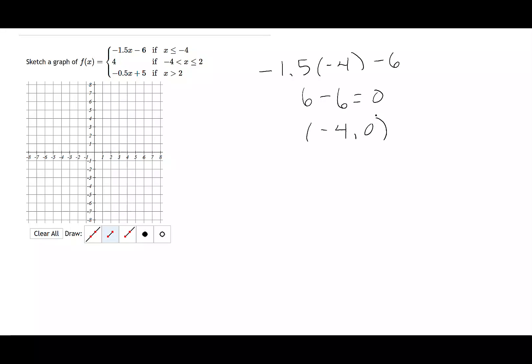What I also want to do is pick a second point that's in this piece of the graph. So what I'm going to pick is something less than negative 4. I'm going to pick it even to keep it easy. So let's say I do negative 1.5 times negative 6 minus 6. Negative 1.5 times negative 6 is positive 9. Minus 6 gives me 3. So my second point I have is negative 6, positive 3.